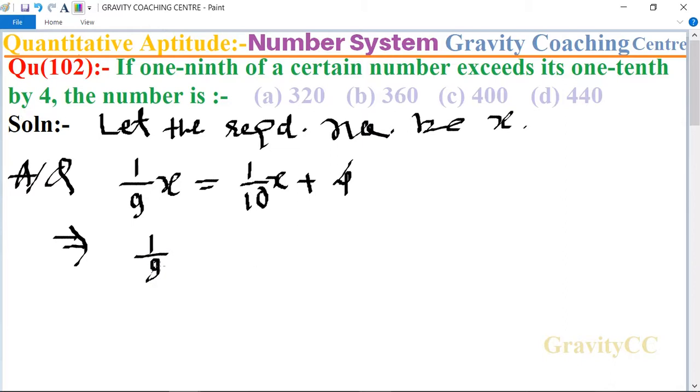1 by 9 x minus 1 by 10 x equals 4. The LCM of 9 and 10 is 90.